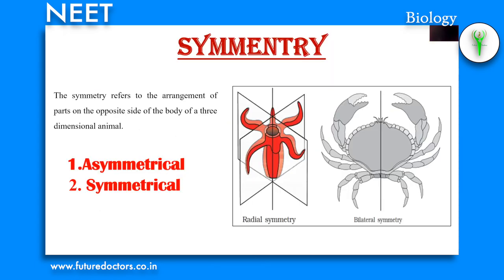Symmetry is an attribute where something is the same on both sides of an axis. Symmetry is of two types: asymmetrical and symmetrical. Asymmetrical means animals in which any plane passing through the center does not divide them into equal halves. In symmetrical animals, the body can be divided into two similar equal halves by one or more planes.